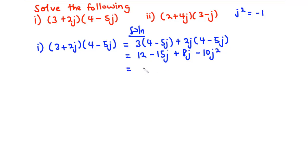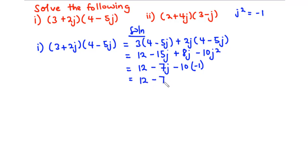We can simplify: 12, then -15j plus 8j gives -7j, so we have 12 - 7j. Then -10 times -1 is +10. Finally, 12 plus 10 is 22, so the final answer is 22 - 7j.